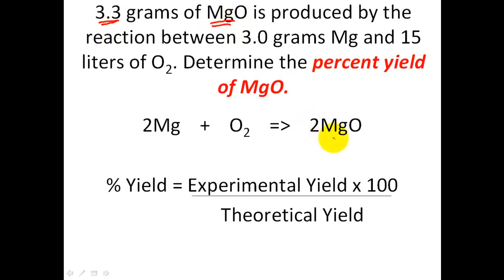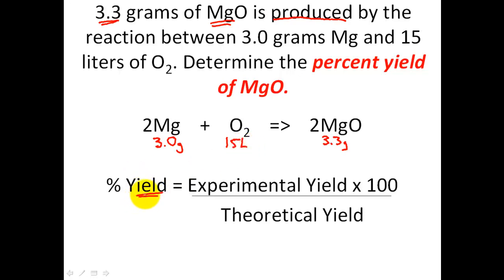Let's write this down: 3.3 grams. That is what is produced in my experiment. It comes by the reaction of 3 grams of magnesium and also 15 liters of oxygen. The goal is to find out what is my percent yield — meaning how much did I make compared to what I was supposed to make. This 3.3 grams of magnesium oxide is my experimental yield — that is what was produced in lab. What you need to now find out is what is my theoretical yield of magnesium oxide.